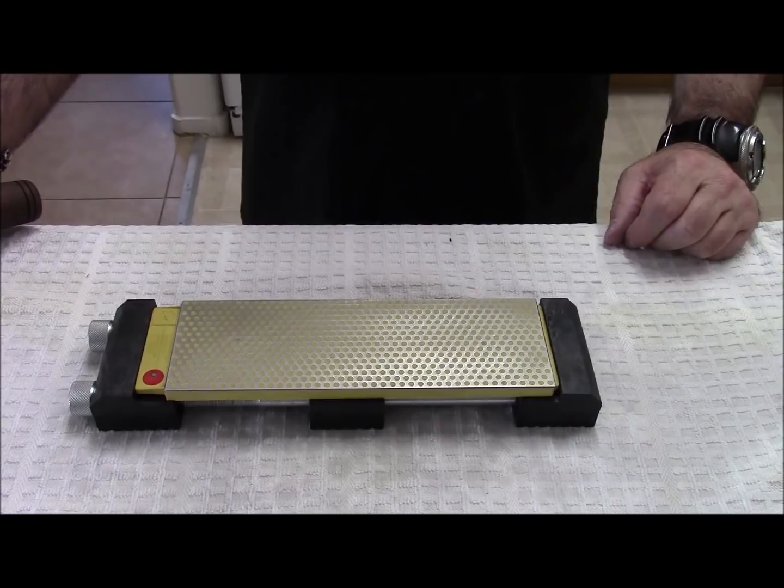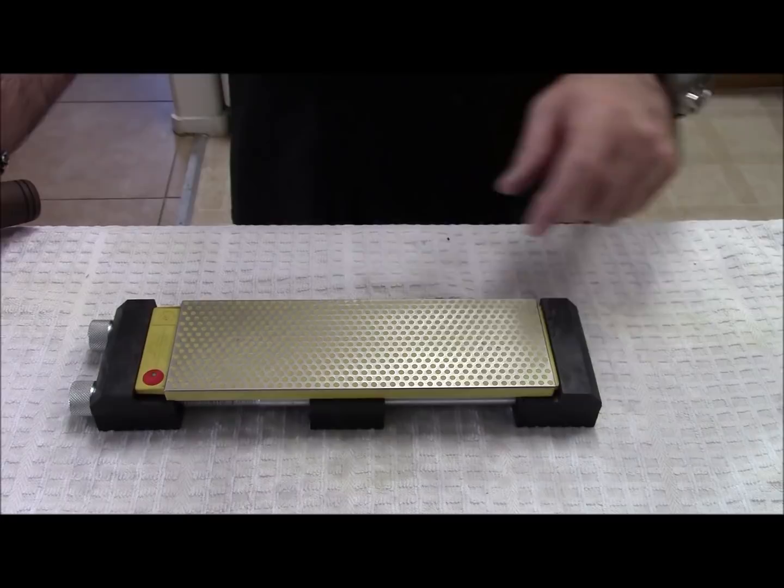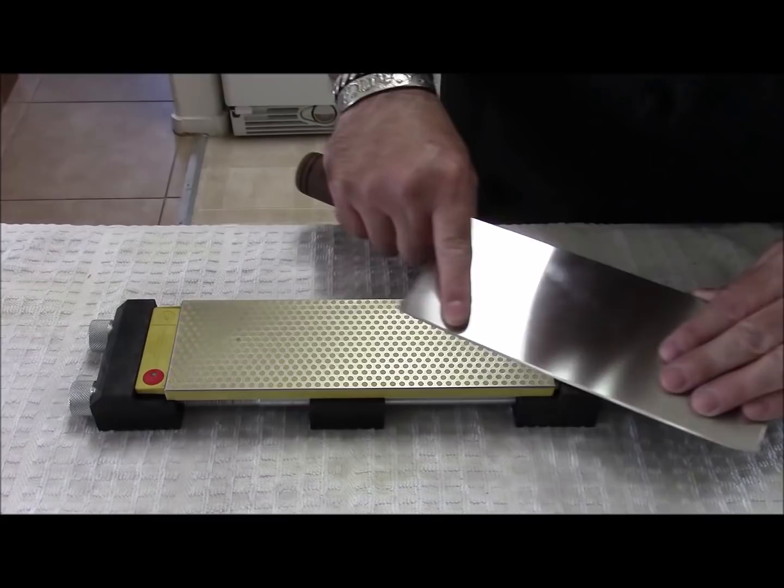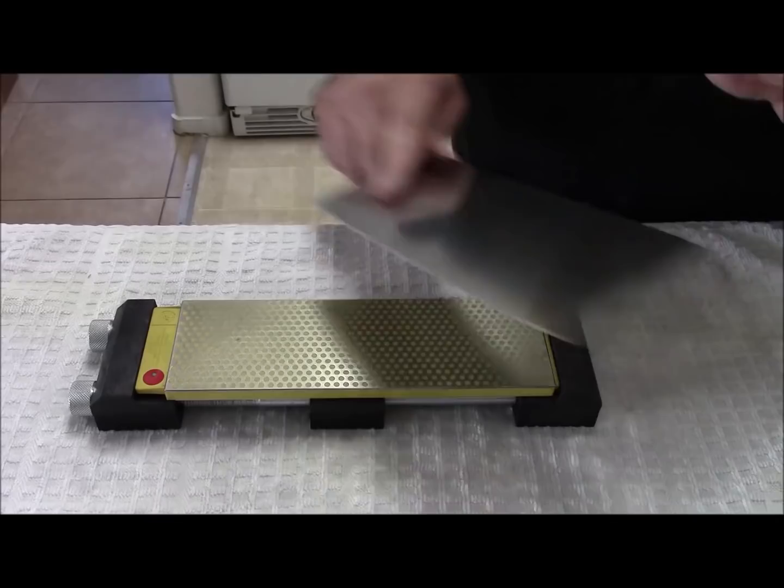Now it's time to move on to the 600 grit, 600 mesh DMT diamond plate. I gave about three minutes on the 325. Now we're moving to the 600. You'll notice I'm using the plates dry. That's because I'm not using them long enough to wet them. So we're going to set the Kaidao on the 600 and apply light pressure and let it smoothly glide over the 600 grit, 600 mesh DMT plate.